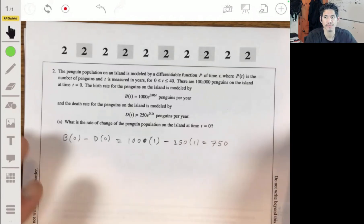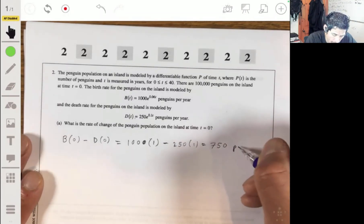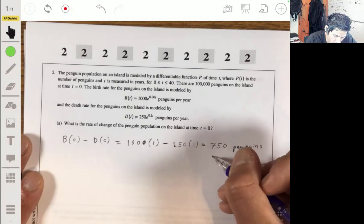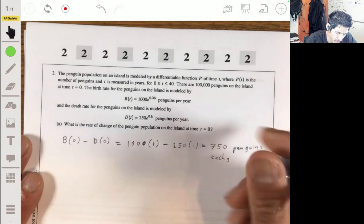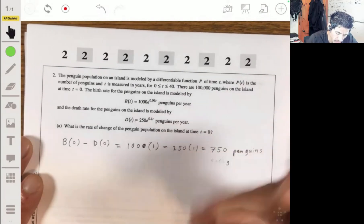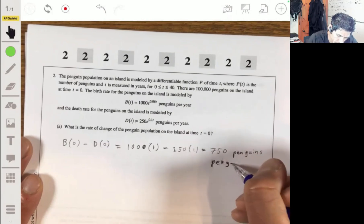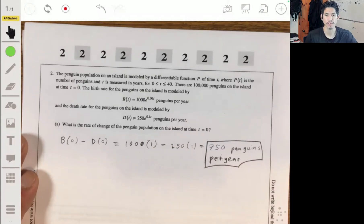And then you'll just get 750. So then it was increasing by 750 penguins per year.